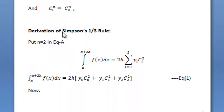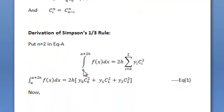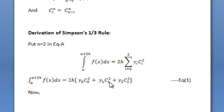Now we derive Simpson's one-third rule from the Newton-Cotes formula. For this we put n equals 2 in equation (a), so the interval becomes a to a plus 2h. Integrating over this interval gives: integral of f(x) dx equals 2h times the summation from i equals 0 to 2 of y_i c_i2. Expanding this summation we get 2h times (y₀c₀₂ plus y₁c₁₂ plus y₂c₂₂). This is equation number 1.